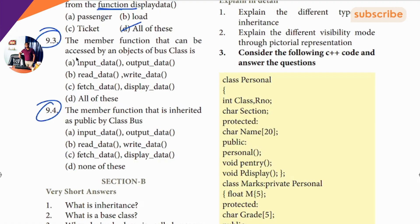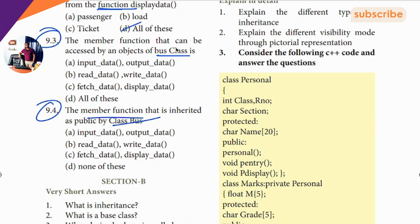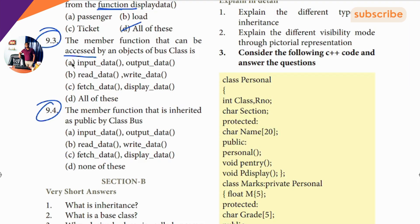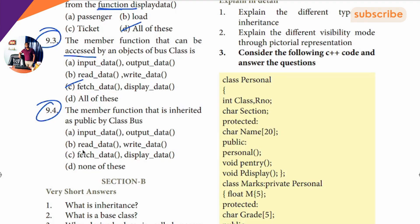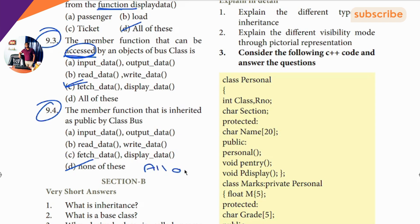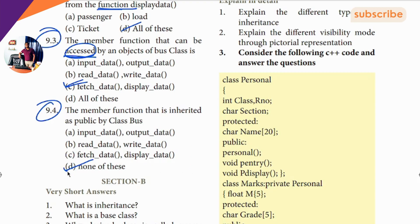But the answer is the same question. Member function, class — the access is the same. The answer is fetch data. One question is access. None of these — one of these — different answers. None of these.